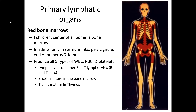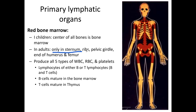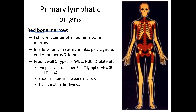Regarding the primary lymphatic organs — red bone marrow: in children, red bone marrow is found in the center of all bones. In adults, red bone marrow is found only in the sternum, ribs, pelvic girdle, and the ends of the humerus and femur. Red bone marrow produces all five types of white blood cells, red blood cells, and platelets.